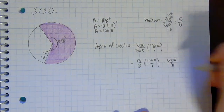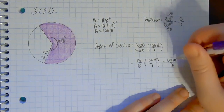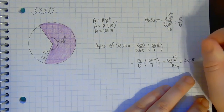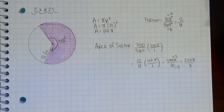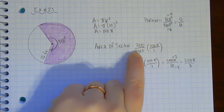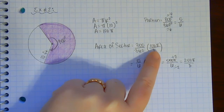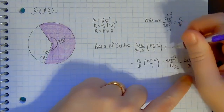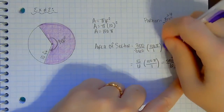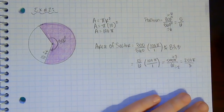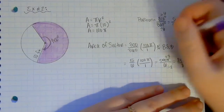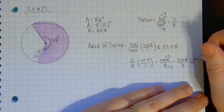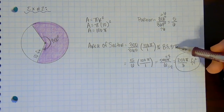500π/6 simplifies further — 2 goes into both top and bottom — giving 250π over 3. That's the most exact answer. If you did decimals from the beginning: 30,000 divided by 360 gives approximately 83.3, so the approximate answer is 83.3π. Don't forget your π, and the units are feet — since it's area, it's feet squared. You can write it either way.